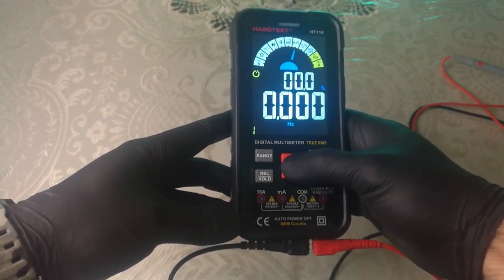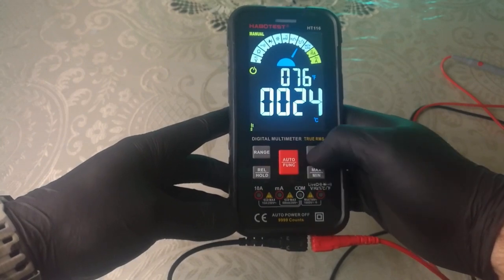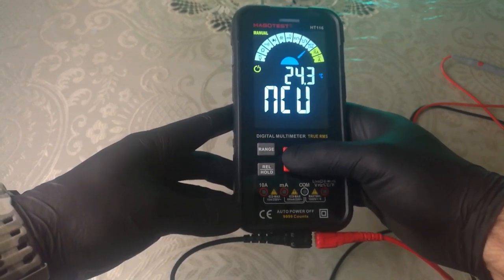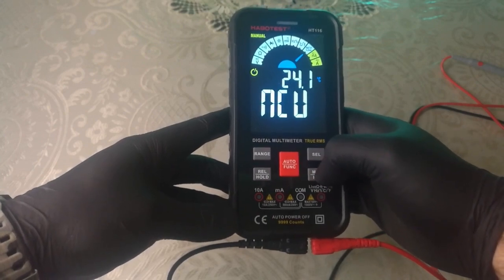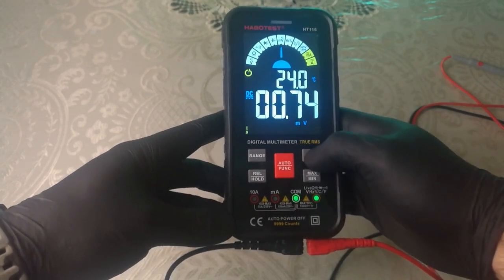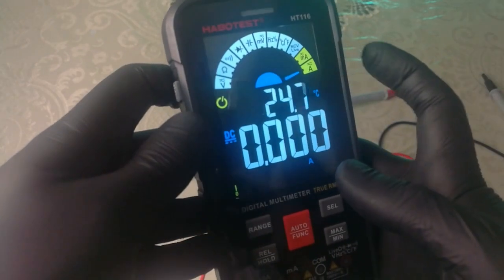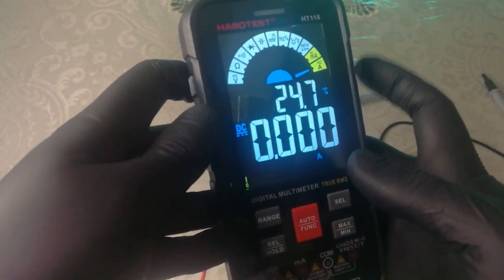Pay attention to the jack LED indicators when you change functions to connect probes. They guide you where the inputs are. You can switch from AC to DC back and forth by pushing the SEL button. Here is the auto power off symbol on the display when you activate it, and this is the flashlight when you push its button.